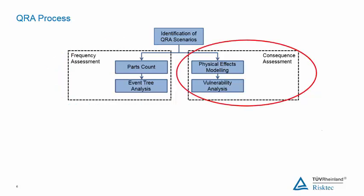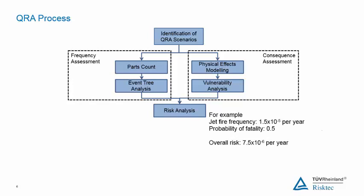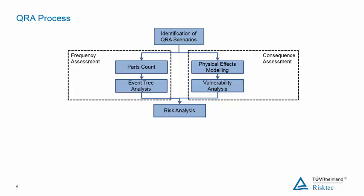The next stage combines these to determine the overall risk. The results of the frequency assessment and the consequence assessment are combined at the risk analysis stage. For example, we may have a section where the frequency of a jet fire is 1.5×10⁻⁵ per year, and the probability of fatality from that jet fire is 0.5, giving a risk from this scenario of 7.5×10⁻⁶ per year. The risk from all the individual scenarios is summed to give the total risk.